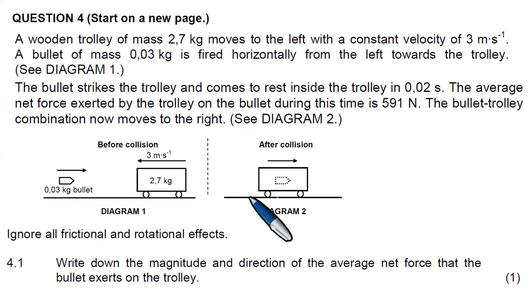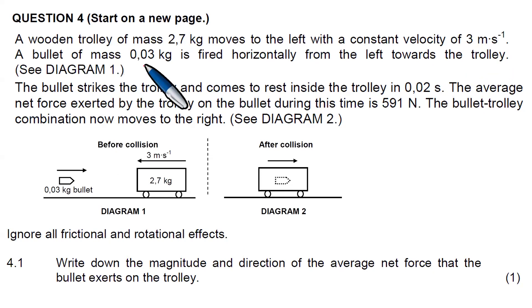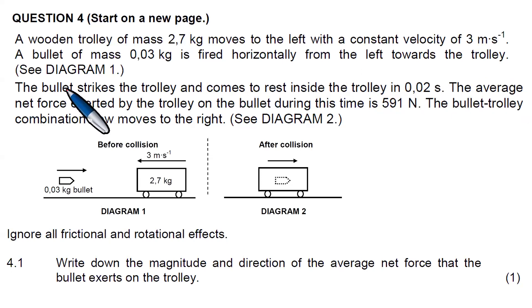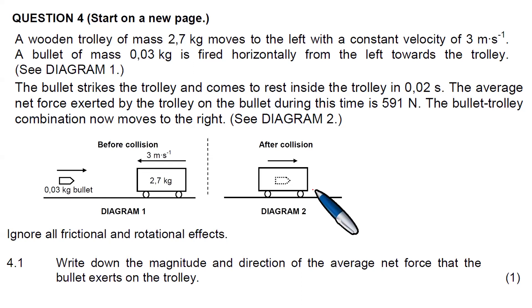In this lesson we shall look at this particular question on momentum. A wooden trolley of mass 2.7 kilograms moves to the left with a constant velocity of 3 meters per second. A bullet of mass 0.03 kilograms is fired horizontally from the left towards the trolley. There are two diagrams: diagram 1 shows the bullet approaching the trolley before collision, and after collision the bullet has penetrated the trolley.